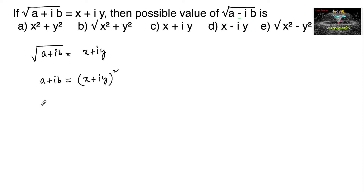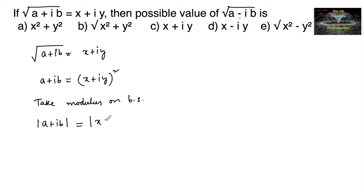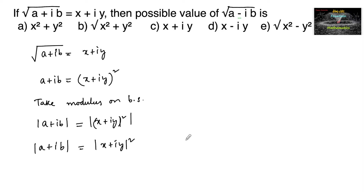Now applying modulus on both sides, we have modulus of (a + ib) equal to modulus of (x + iy) whole square. Since modulus of z^n is the same as mod(z) whole power n.